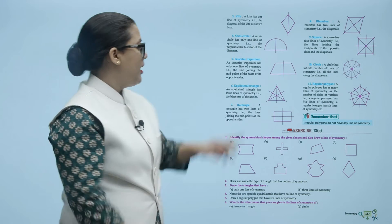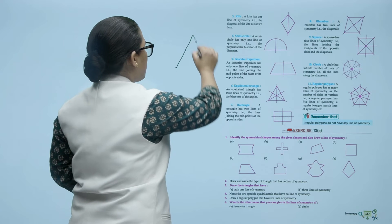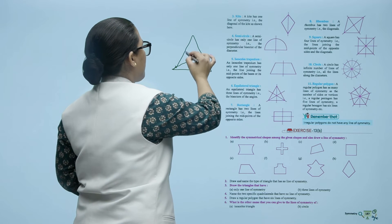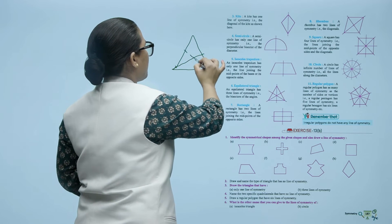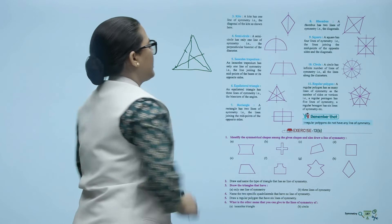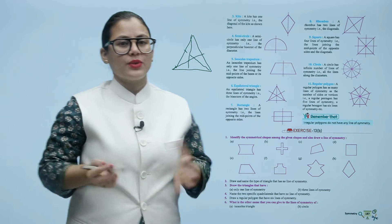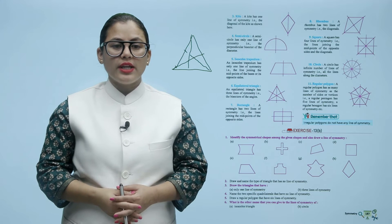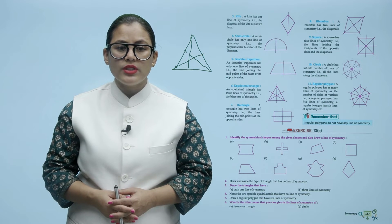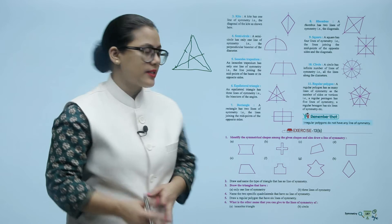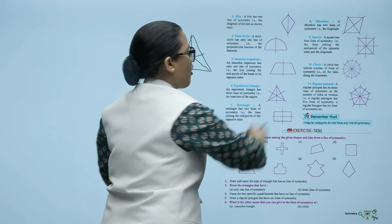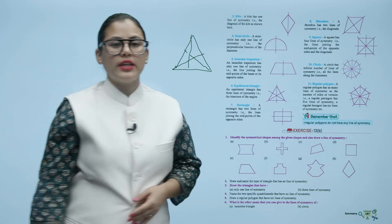An equilateral triangle has three lines of symmetry, that are the bisectors of the angles. Since all three sides are equal, there are three lines of symmetry. A rectangle has two lines of symmetry, that are the lines joining the midpoints of the opposite sides — both horizontally and vertically.